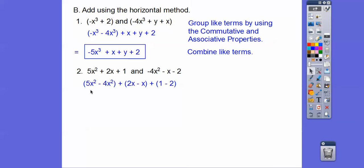And then now we can just add the coefficients. 5 minus 4 is 1x squared, or just x squared, plus x. And then this becomes minus 1. Easy.